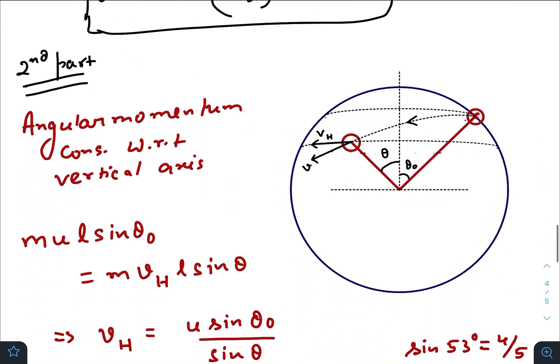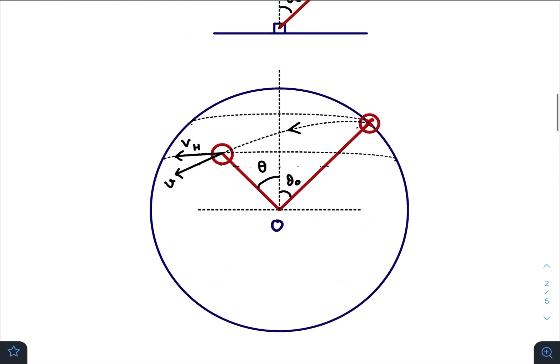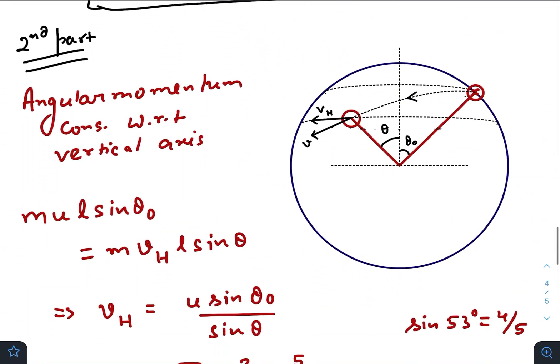Now let's come to the second part. They have asked what will be the value of vₕ, or the horizontal component of the velocity, at this instant. This component should be parallel to this plane and perpendicular to the rod.